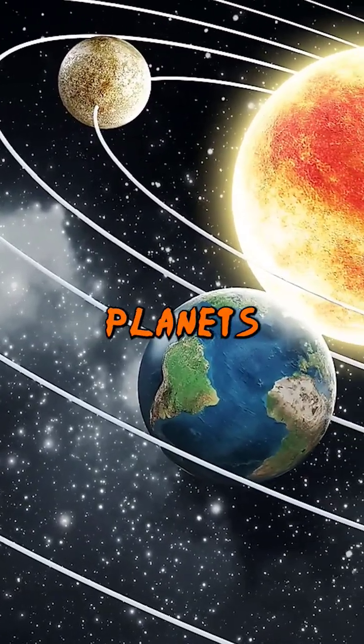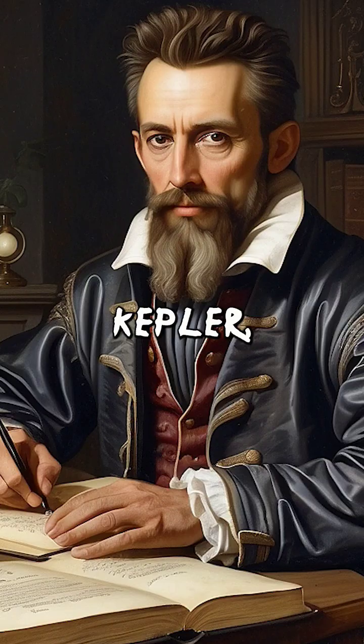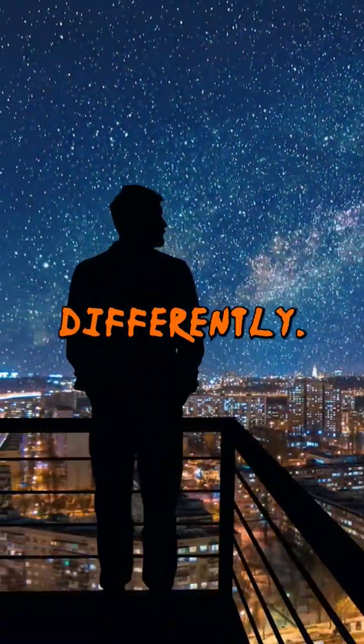For centuries, everyone believed planets moved in perfect circles. Then came Johannes Kepler, a bold thinker who dared to see the cosmos differently.